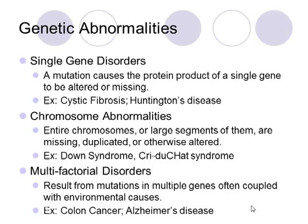A single gene disorder is any time you have a mutation in just one gene, or if that entire gene is missing. An example of this is Huntington's disease. In Huntington's disease, the HTT gene has a lot of extra CAGs in it, which means the Huntington protein is a lot longer. And that negatively affects the neurons, so it causes progressive brain disease and eventually death later in life.